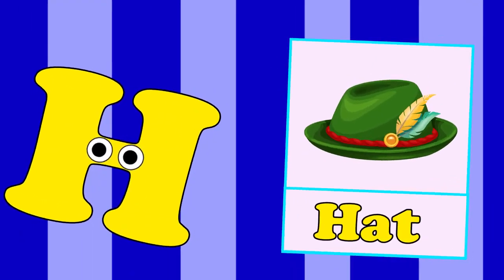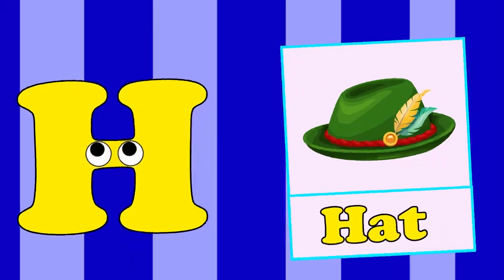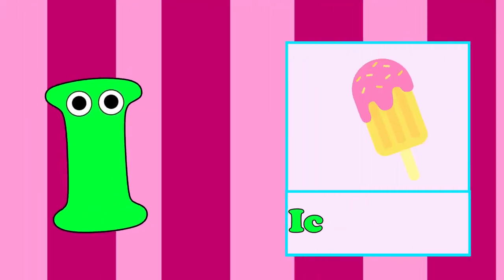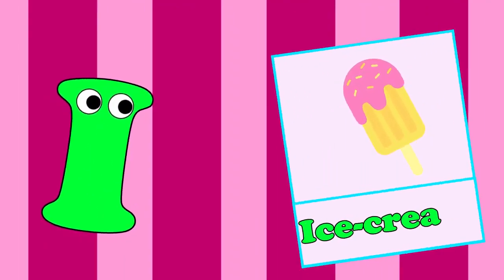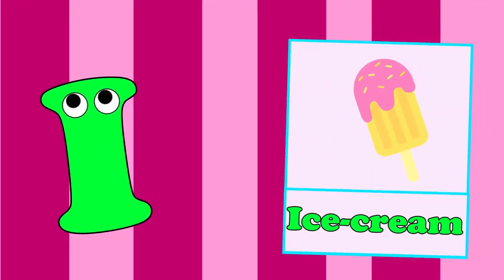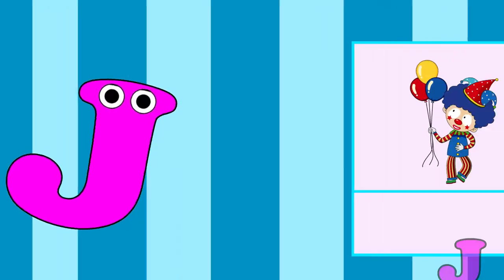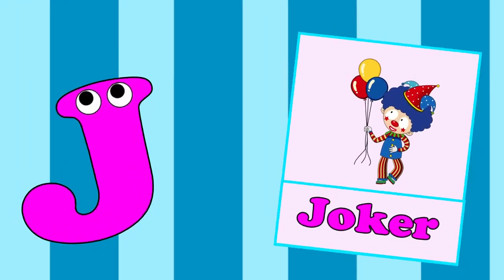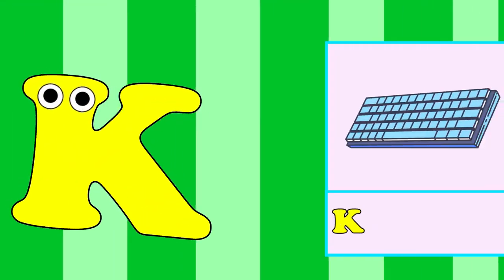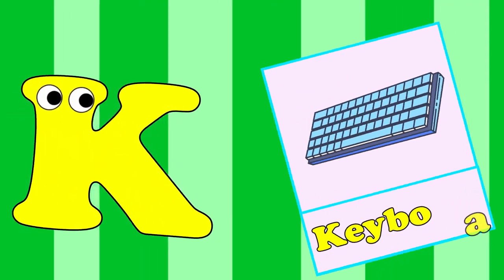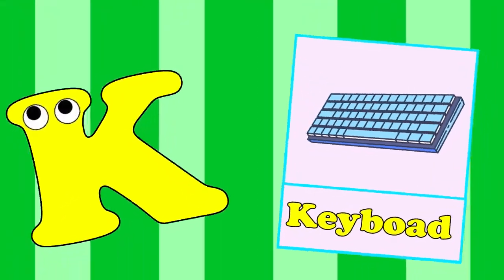H is for Head. Ha, Ha. Head. I is for Ice Cream. Eh, Eh. Ice Cream. J is for Joker. J, J. Joker. K is for Keyboard. Ka, Ka. Keyboard.